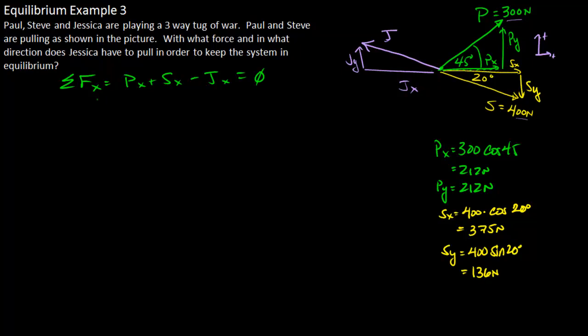We can plug in our numbers. We have 212 plus 375 is what Jessica's x-force has to balance out. So her force in the x-direction is going to be 587 newtons.